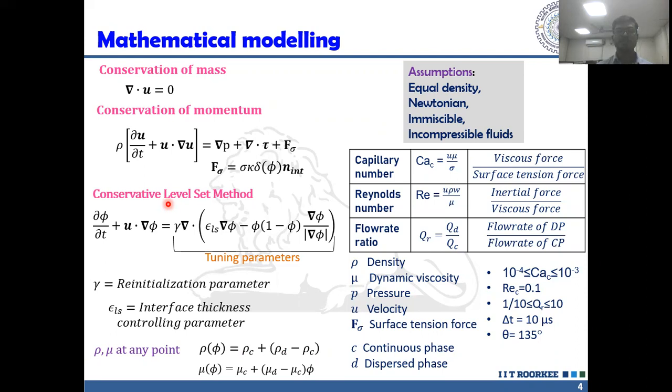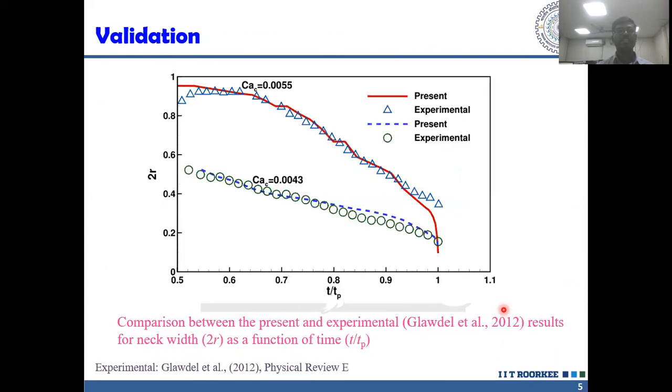The dimensionless numbers used are capillary number, Reynolds number, and flow rate ratio. The ranges of numerical parameters are shown here. The validation of the present work is shown in this particular slide.